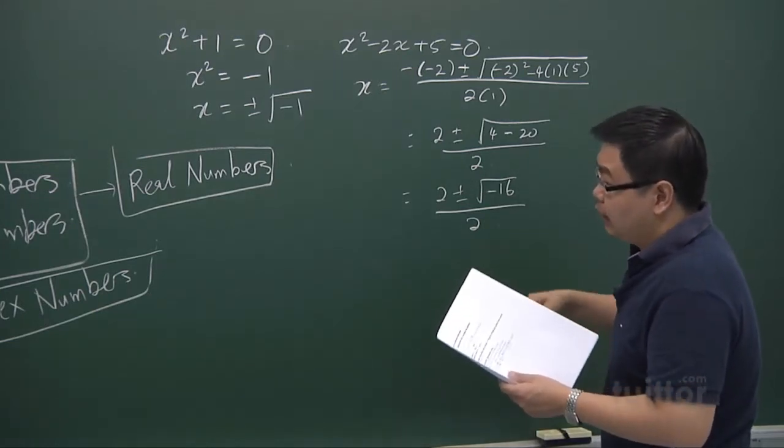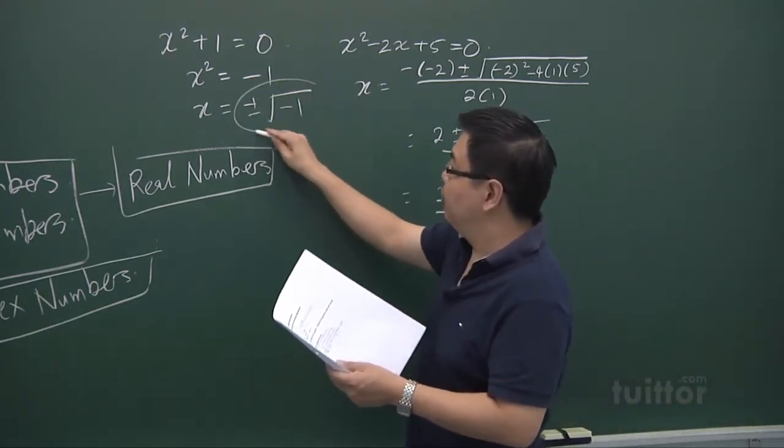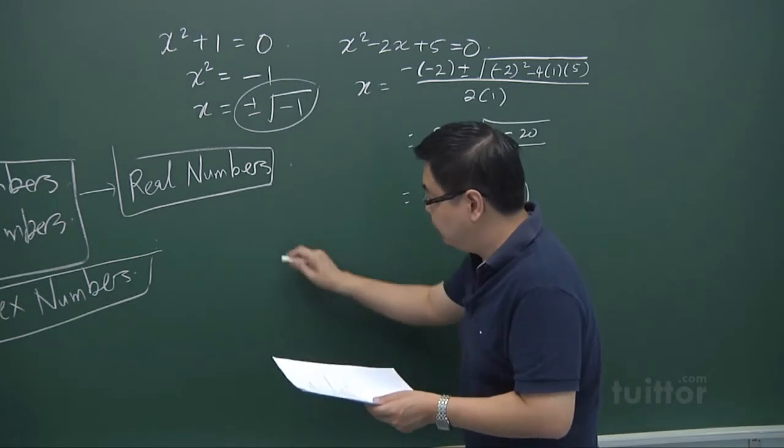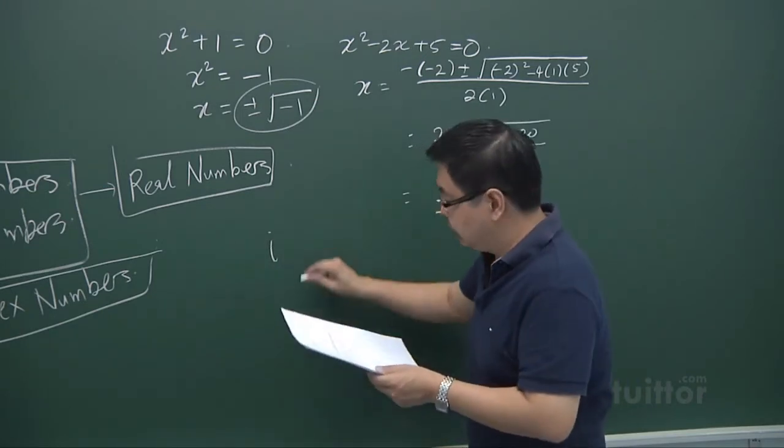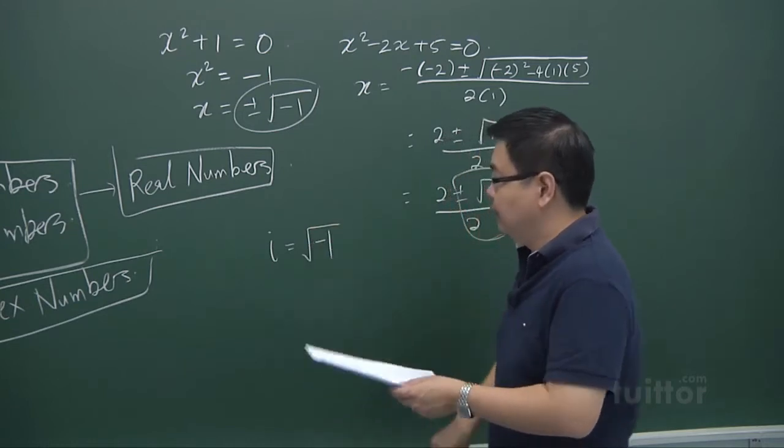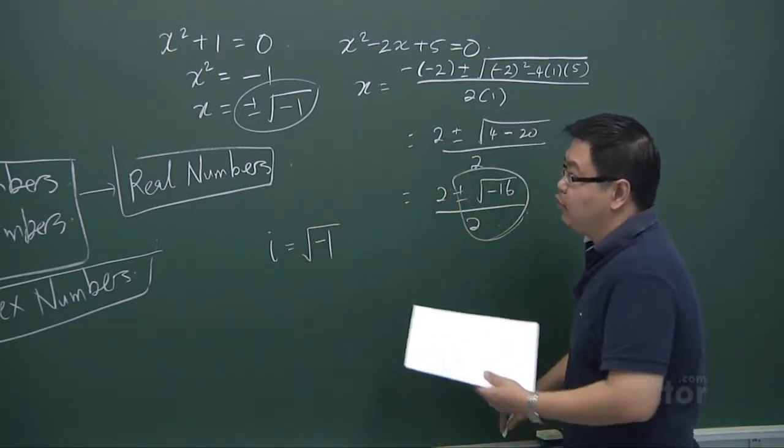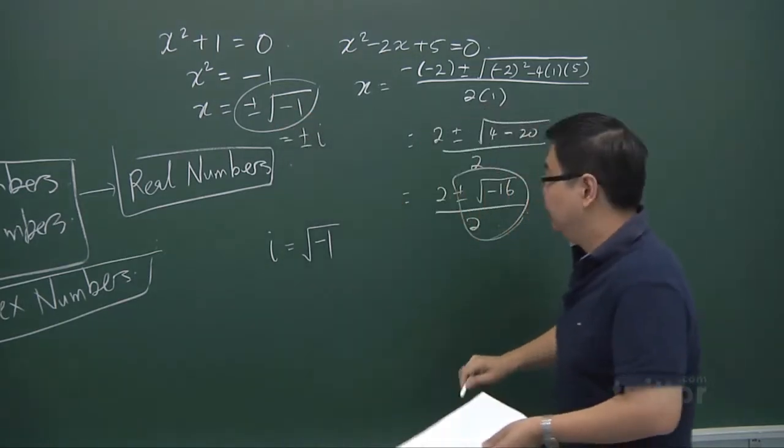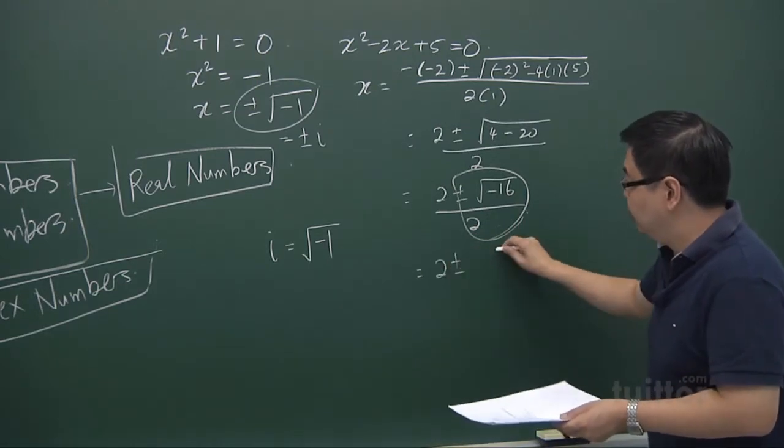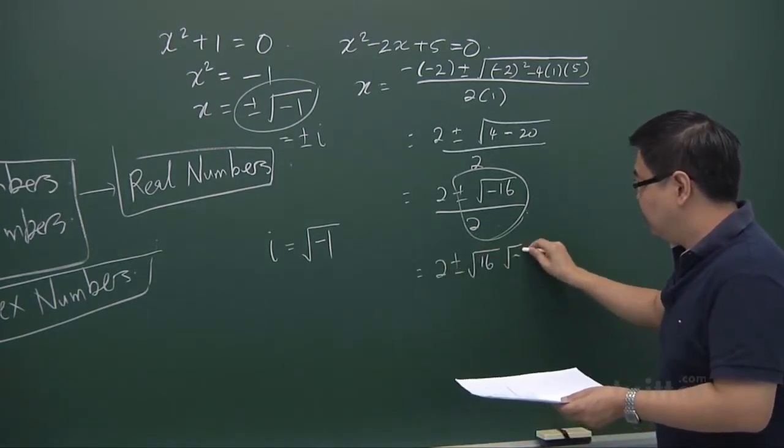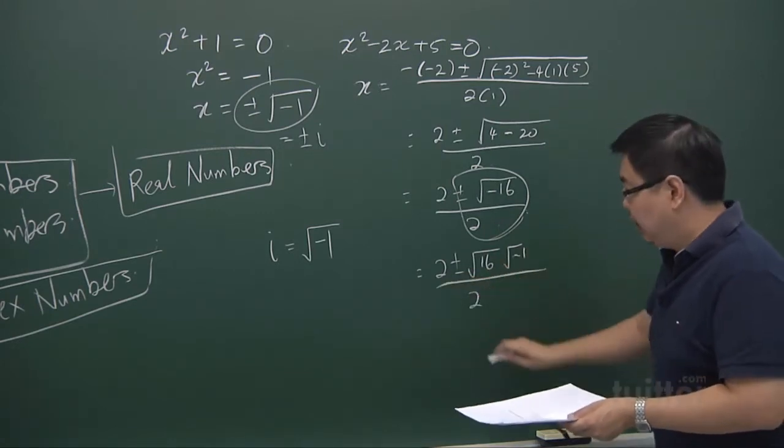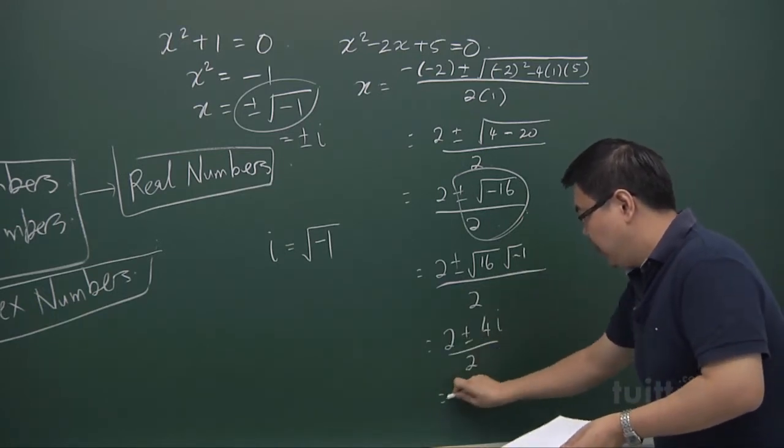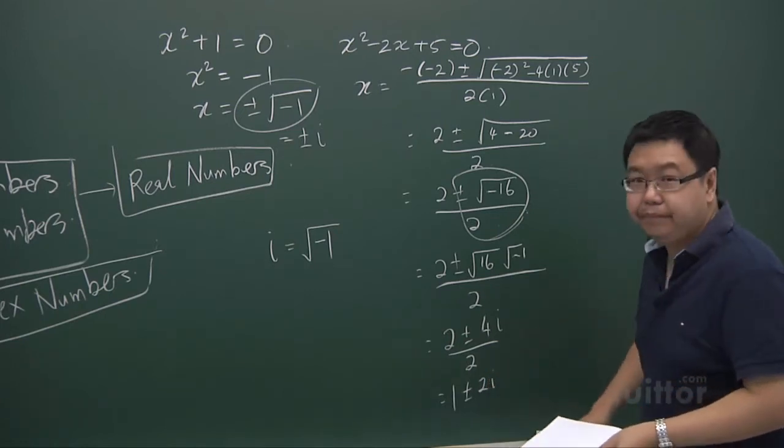Now what are then complex numbers? Because of this kind of issue where we cannot evaluate, we try to introduce you this number that is called i. And this i is actually given by the positive square root of minus 1. With this introduction of numbers, this term here becomes plus minus i. And this term becomes 2 plus minus positive square root of 16, positive square root of minus 1 over 2. And it becomes 2 plus minus 4i over 2. And so we have 1 plus minus 2i.